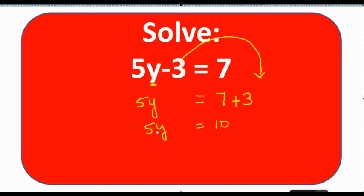5y equals 10, and the relation between 5 and y is multiplication. If there is no symbol between a number and a variable, it means multiplication. So when we send the multiplication number to the other side, it becomes division. Therefore, 10 divided by 5 is 2.